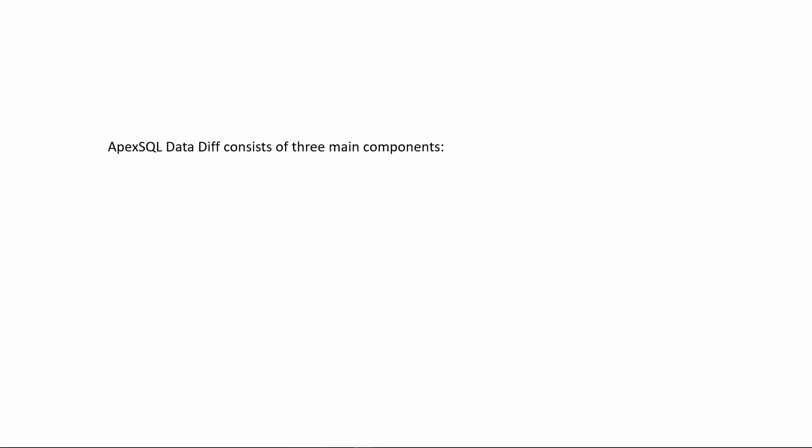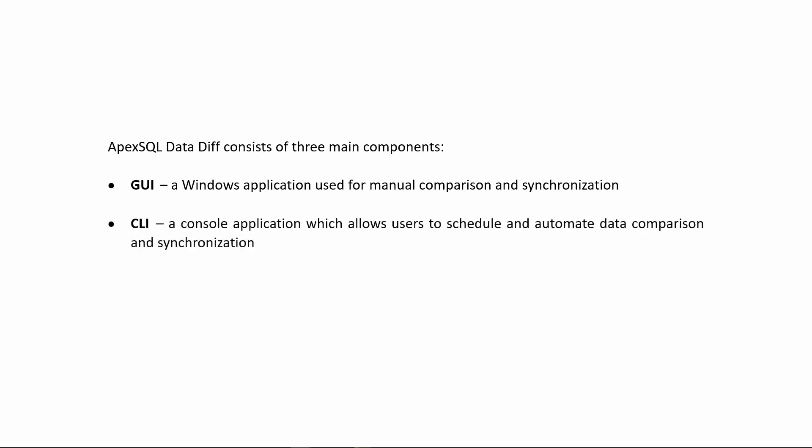Apex SQL DataDiff consists of three main components. The first is the GUI, a Windows application used for manual comparison and synchronization, selecting specific objects and rows and various options for comparison and synchronization processes. The second is the CLI, a console application which allows users to schedule and automate data comparison and synchronization along with creating reports, and to run everything unattended.